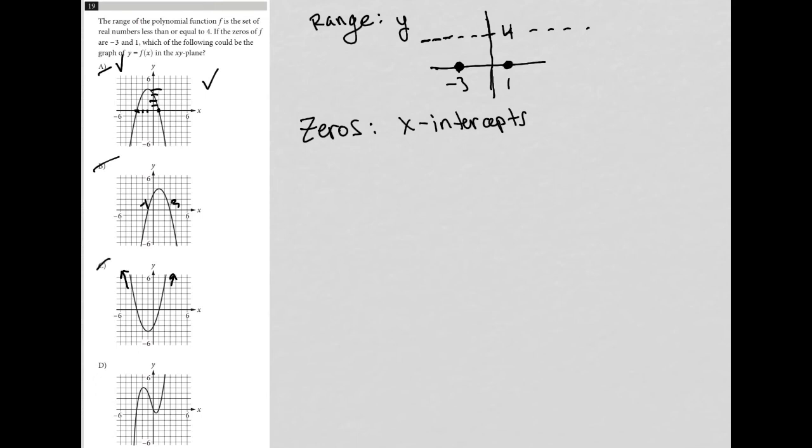And then choice D, the same thing, right? So we do have an x-intercept at 1, and we do have an x-intercept at negative 3, but again, 1, 2, 3, 4, we have all of this part of the graph here that exists above 4, and we don't want that.